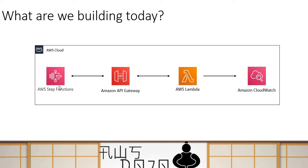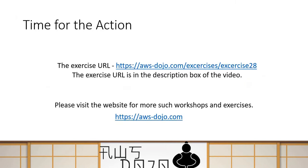This is what we are going to build today to demonstrate how you can call an API inside a Step Function state machine workflow. We have created this exercise and published it to our website, aws-dojo.com. I have also provided this URL in the description box below, and I'm going to walk you through the steps.